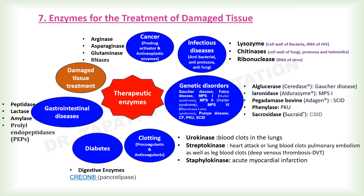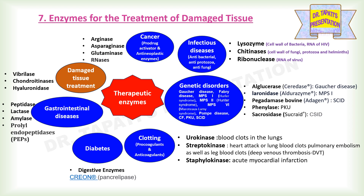For the treatment of damaged tissue, vibrilase is a proteolytic enzyme from Vibrio proteolyticus (a bacterium) found to be effective for the removal of dead skin or burns. Chondroitinase is useful in conditions where there is an increase in the level of chondroitin sulfate proteoglycans (CSPGs), namely spinal cord injury, vitreous attachment, and cancer. Hyaluronidase is an enzyme that breaks down hyaluronic acid and has long been used to increase the absorption of drugs into tissue and to reduce tissue damage in cases of extravasation of a drug.